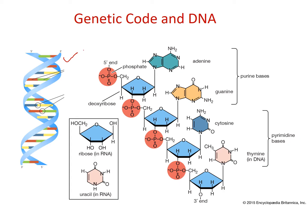To understand this, we need a clear idea about the genetic code. Looking at the structure of the DNA molecule, it is composed of three components: phosphoric acid, deoxyribose sugar, and nitrogen bases. There are four types of nitrogen bases in DNA: adenine, guanine, cytosine, and thymine. In RNA, thymine is replaced by uracil.